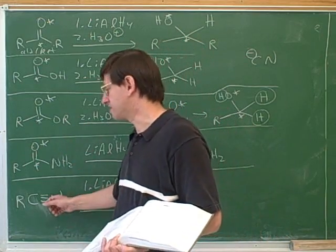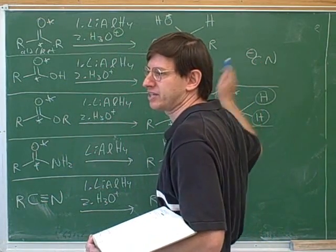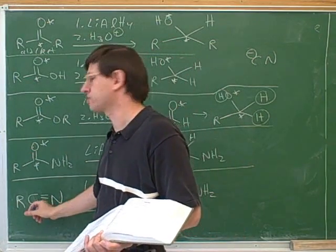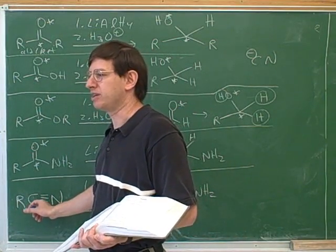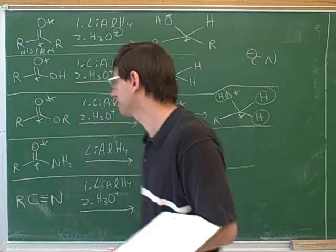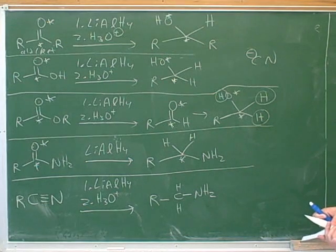SN2. SN2. We can use cyanide as a nucleophile and have it attack an alkyl halide. And that'll put a cyanide group in. Of course, that only works if you're willing to add an extra carbon. But if you want to make an amine with one extra carbon, cyanide SN2 would be a good way to go.